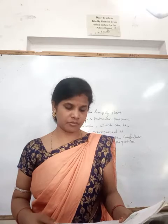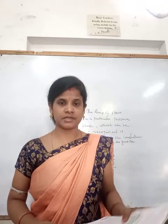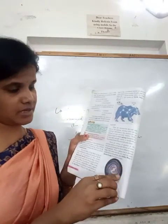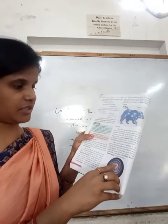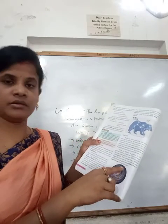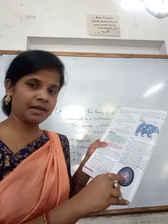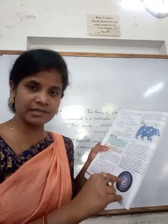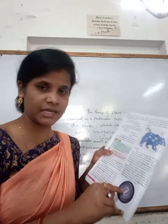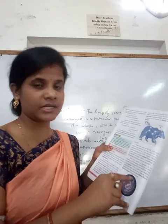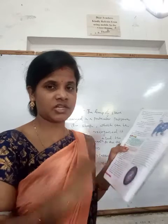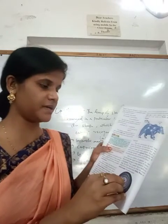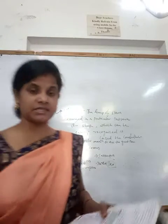The Milky Way galaxy is spiral in shape. It is also called Aakash Ganga. It is composed of billions of stars. There are billions of galaxies in our universe, and each galaxy is made up of billions of stars.